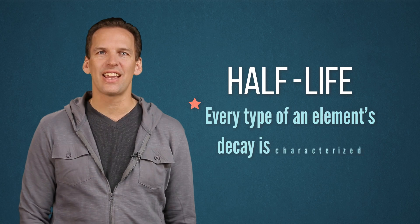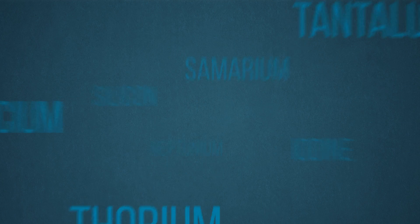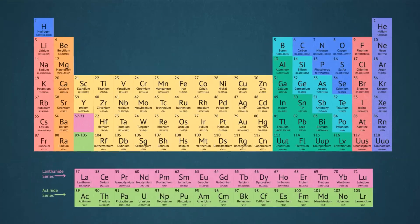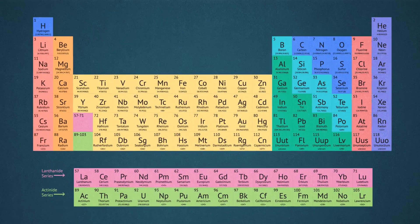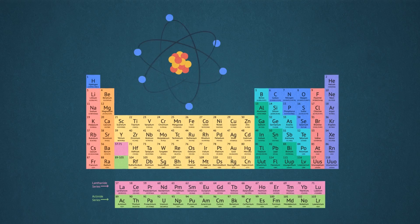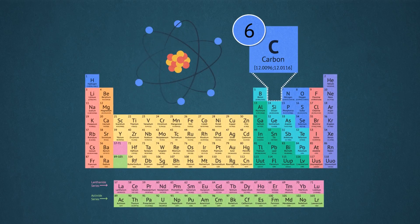Every type of an element's decay is characterized by a half-life. Scientists have discovered a lot of the elements that make up Earth's chemistry. Eventually, scientists arranged these elements into a table, called the periodic table, based on the properties of the elements. One of the primary features of an atom that determines where it's located on the periodic table is the number of protons it has.